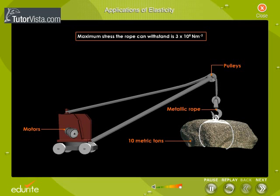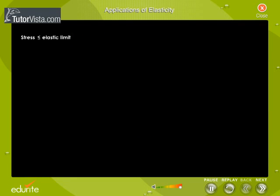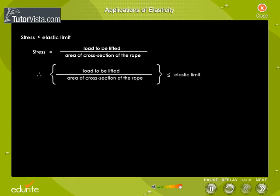Obviously, the stress produced in the rope should not exceed the elastic limit, i.e., stress ≤ elastic limit. Stress equals load to be lifted divided by area of cross-section of the rope. Therefore, load divided by cross-sectional area must be less than or equal to the elastic limit. From this relation, we can calculate the area of the cross-section of the rope.